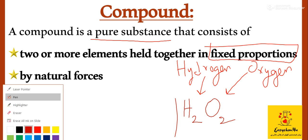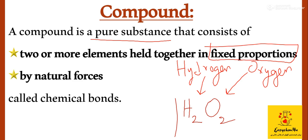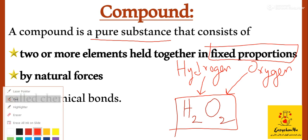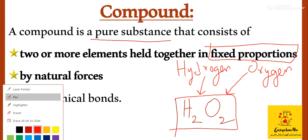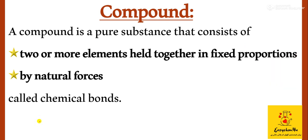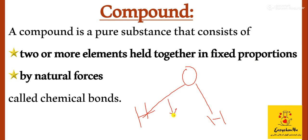The compound definition is fulfilled for hydrogen peroxide. The second part of the definition states that when elements combine in fixed proportions, they are held together by natural forces. In the case of water, the oxygen and hydrogen are joined by covalent bonds, which are a type of chemical bond. In coming lectures, we will study the types of bonds in detail.